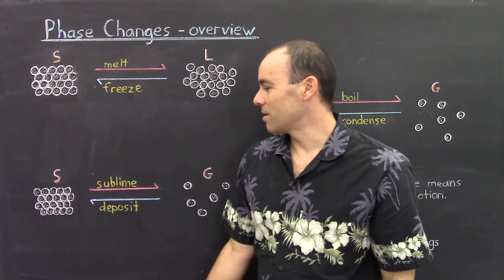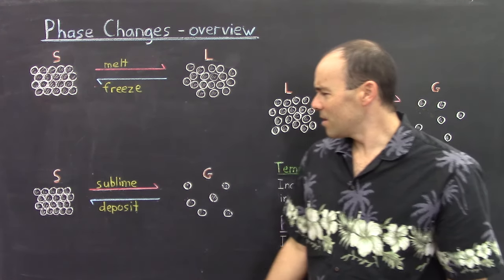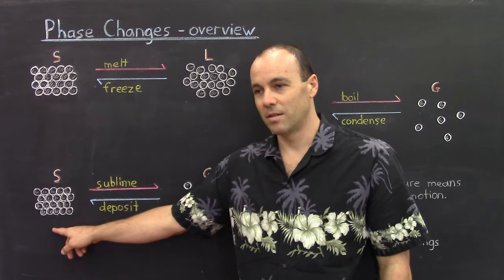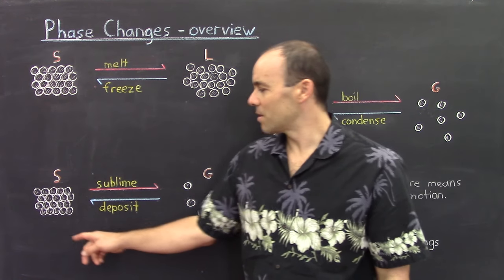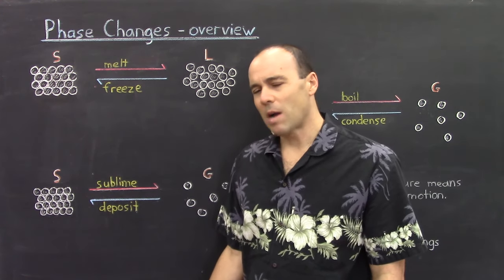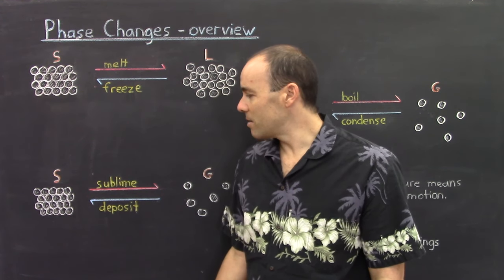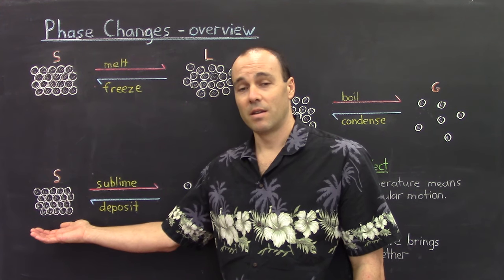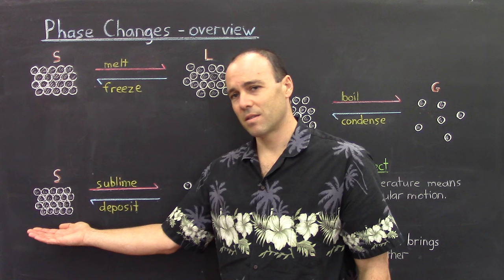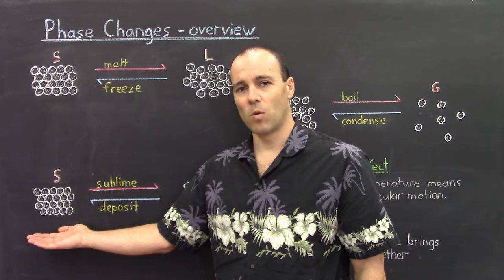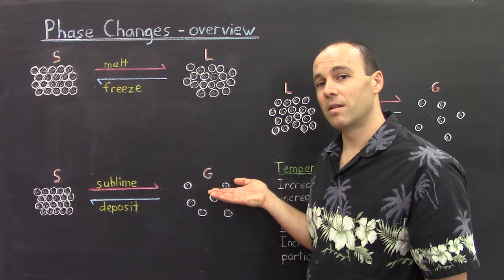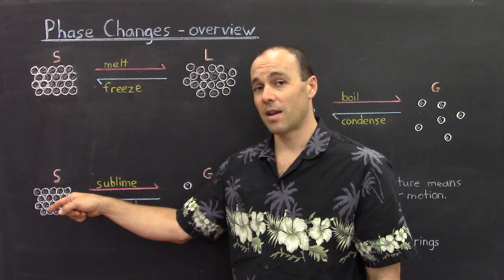Now, a less discussed phase transition is between the solid and the gas phase. This might be less familiar because we don't see it happening for water — we always see water going from solid to liquid and then to gas. But sometimes, under certain conditions, solids can sublime directly into the gas phase. You've probably seen dry ice, which is a piece of solid carbon dioxide that vaporizes directly into the gas phase. As the solid warms up, the particles have more molecular motion and thermal energy, and that's how sublimation can occur. And if you cool the gas particles back down, they will redeposit back onto the surface of the solid — that's deposition.